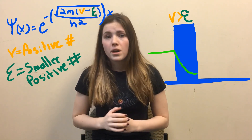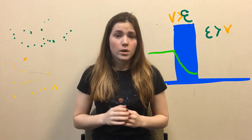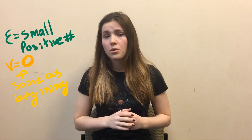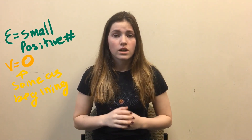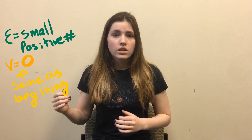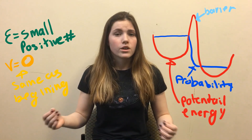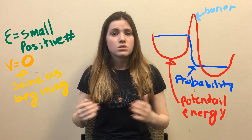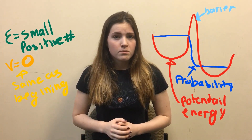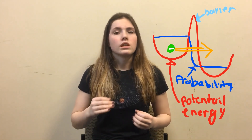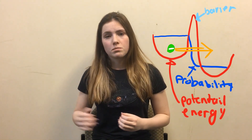On the other side of the barrier, we go back to normal, where the potential energy necessary to be there is zero, and the electron has a normal amount of energy. The likelihood that the electron crossed through the barrier goes down quite a bit, meaning it's very unlikely, but still possible, that the electron will cross the barrier.